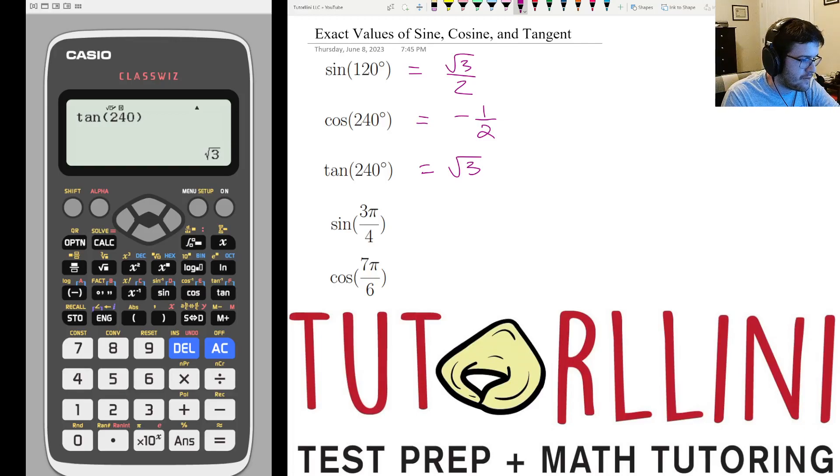Okay, so these next two, there's no degree symbol, so that means these are in radians. We're going to put shift setup, and we're going to change our angle unit to radian. We're going to do sine of 3 pi over 4, so 3, and then if you press shift, the pi button is down here,